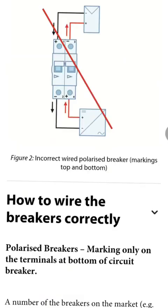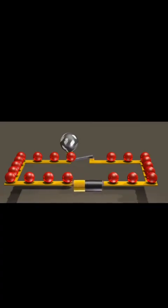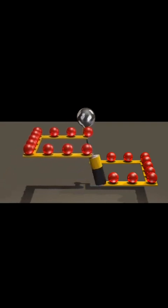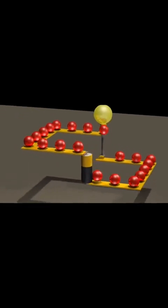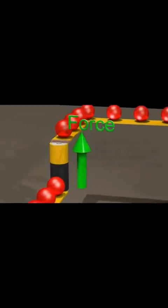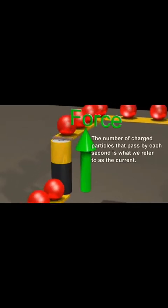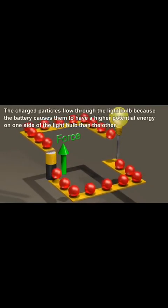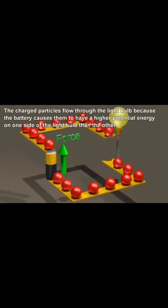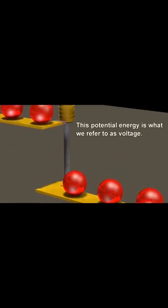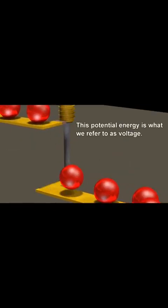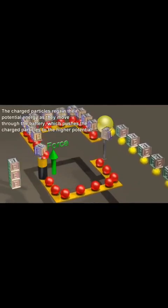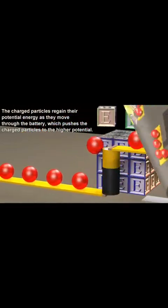I'm going to quickly show this video just to show you the direction of the flow. The battery creates a force pushing the charged particles in the wire, causing them to flow in a loop around the circuit. The number of charged particles that pass by each second is what we refer to as the current. The charged particles flow through the light bulb because the battery causes them to have a higher potential energy on one side of the light bulb than the other. This potential energy is what we refer to as voltage.